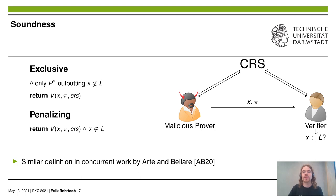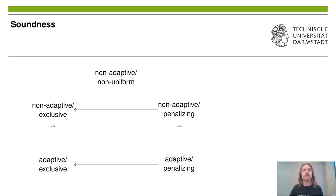Similar to definitions for INT-CCA by Bellare et al., we call the first case exclusive soundness, as we exclude all malicious provers that output x in L, and we call the second case penalizing soundness, as it penalizes the malicious prover for outputting x in L. Note that in concurrent work, Akter and Bellare made a similar distinction and incidentally came up with the same names. The difference between exclusive and penalizing soundness may appear insignificant at first. Indeed, for non-interactive proofs against unbounded adversaries, all different soundness properties presented here are equivalent. However, for non-interactive arguments this is not the case, as a malicious but bounded prover might itself not know whether its statement x is in the language L or not.